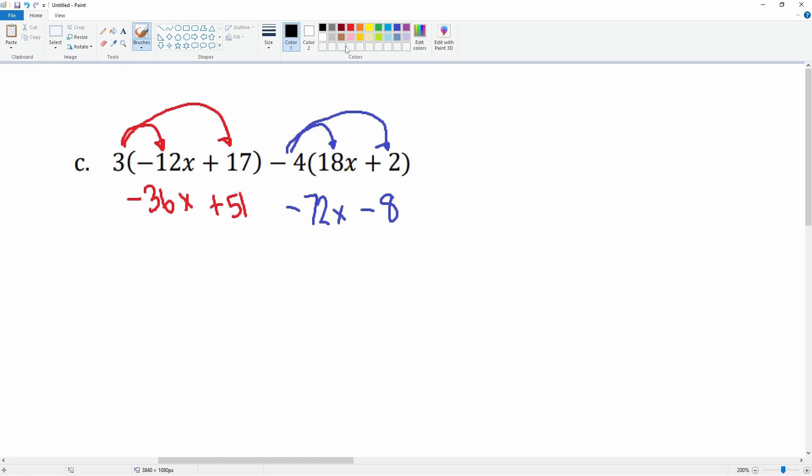So we have the variables negative 36x and negative 72x. Together, when you add them, you get negative 108x.